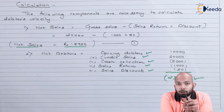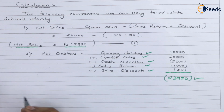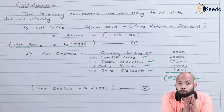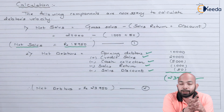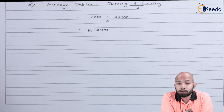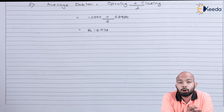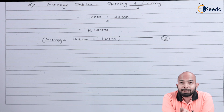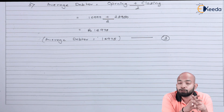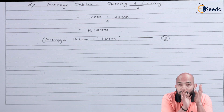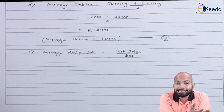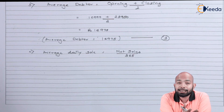So the closing balance of debtors is found out as Rs. 23,950. Now with the opening and closing balance, we can figure out the average debtor. Average debtor is: opening balance of debtor plus closing balance of debtor, that is 10,000 and 23,950 divided by 2, which gives Rs. 16,975. Now once the average debtor is cleared out, we need to figure out what is the debtor velocity — that is, how many days of credit can we provide. We need to find the average daily sales.